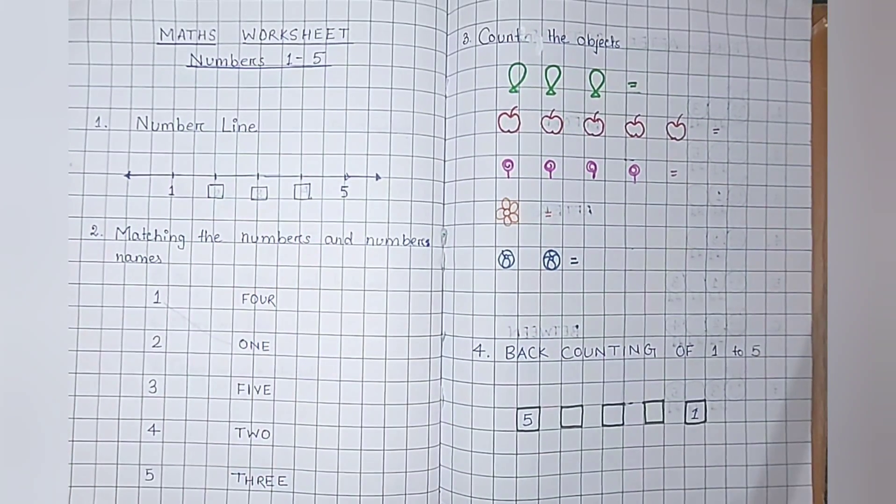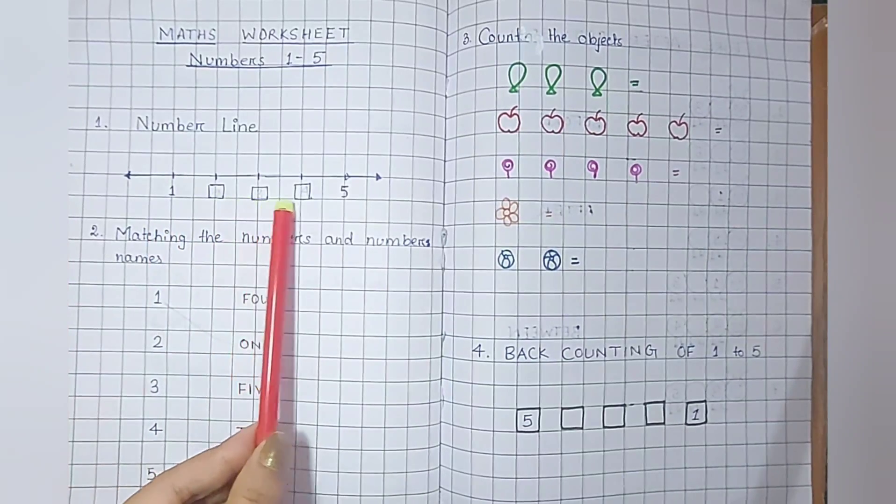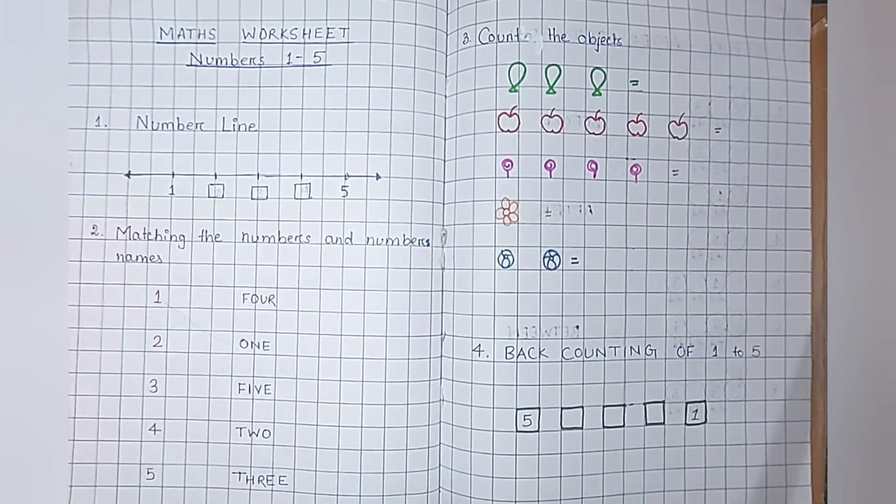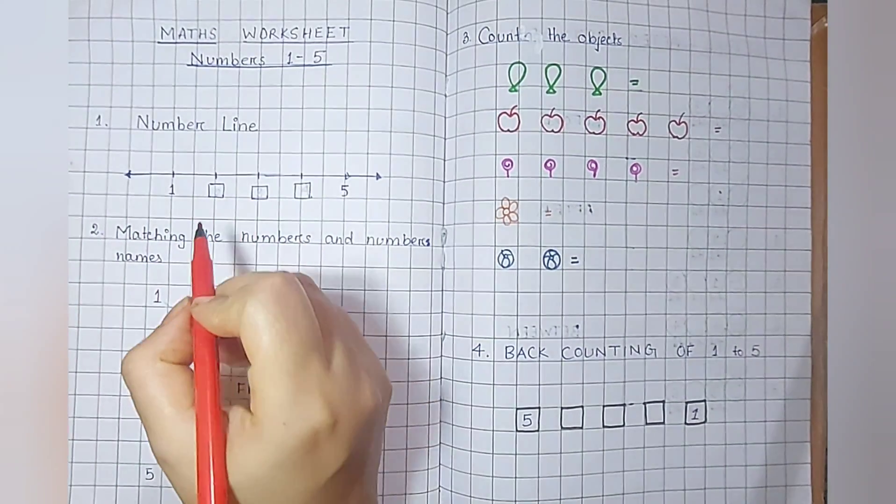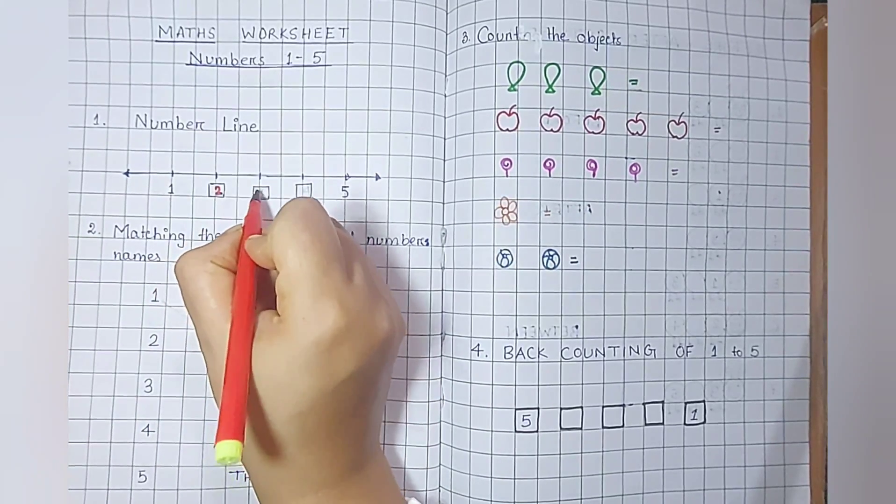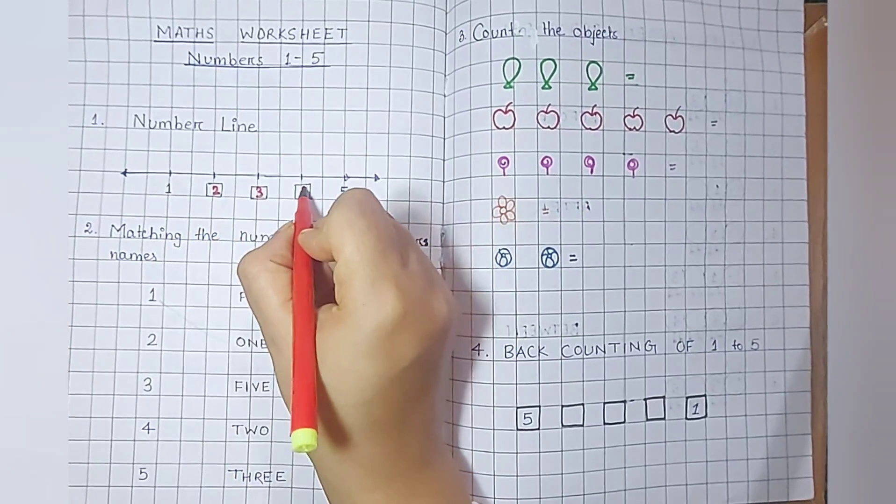In the first question, fill in the missing number line. First number is 1, next 2, 3, 4.